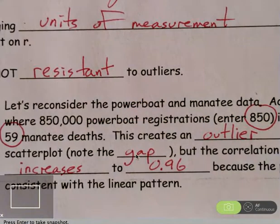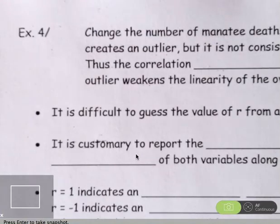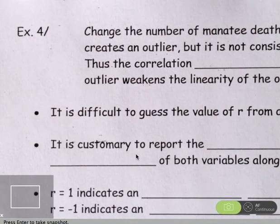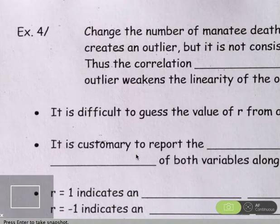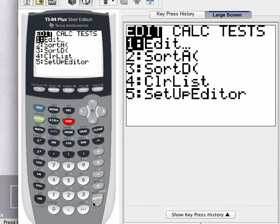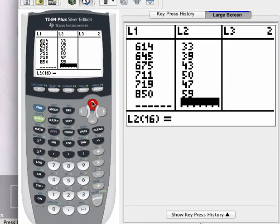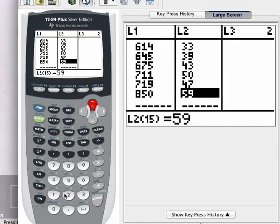So, to the back side. This time, let's give it a second to focus here. We're going to go back to that observation with the 850,000 powerboat registrations. But this time, we're going to create a different type of outlier. So, let's press STAT and EDIT. We're going to go in there and list 2. I'm going to press the up arrow twice and take me to the bottom of the list. So, instead of the observation of 59, I'm going to change that observation to a 21.